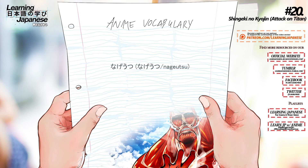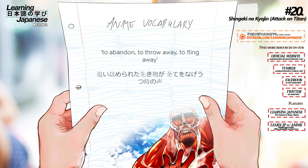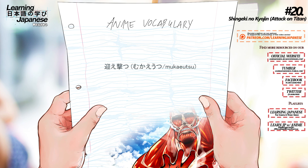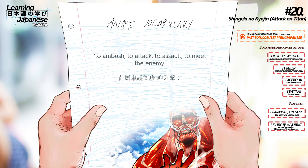投げうつ (nagiutsu) — To abandon, to throw away, to fling away. 迎え撃つ (mukaeutsu) — To ambush, to attack, to assault, to meet the enemy.